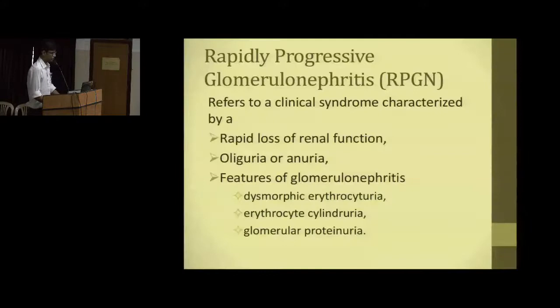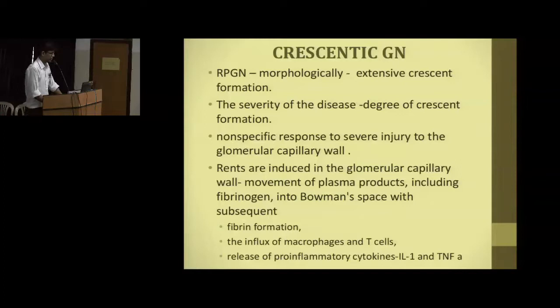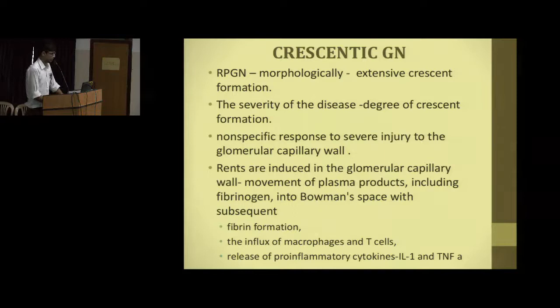The diagnosis was anti-GBM disease with mononeuritis multiplex. The approach: this patient had loss of renal function — creatinine was very high and he had oliguria, putting out not more than 100 ml of urine per day, with features of glomerulonephritis. In RPGN, morphologically there are extensive crescent formations due to antibody cross-reaction with the basement membrane of Bowman's capsule, inducing rents — holes and scattered breakage in the epithelium.